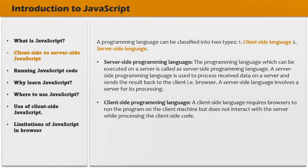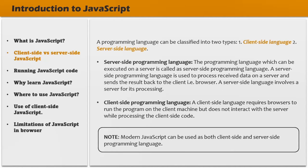When JavaScript was created, it was a client-side programming language — JavaScript programs were only capable of running inside the browser. However, JavaScript has evolved a lot since then, and modern JavaScript programs can be used outside of the browser to create mobile apps, desktop apps, etc. Modern JavaScript can also be used as a server-side programming language with frameworks like Node.js. So remember that modern JavaScript can be used both as a client-side as well as a server-side programming language.